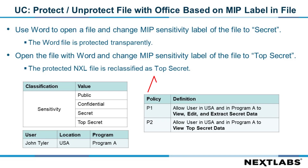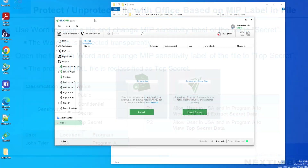The policies created for the demo are: Policy 1 — allow user in USA and in Program A to view, edit, and extract secret data. Policy 2 — allow user in USA and in Program A to view top secret data. Now let's move into the demo.